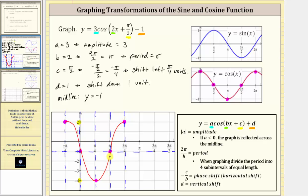Once we have one period of the graph, we can simply copy and paste this graph to the left and right, or just continue the pattern. Moving to the right, we would be at the midline, then down at a minimum, and back to the midline. We can complete more of the graph to the right. Going to the left of where we started, we would be at the midline here. I hope you found this helpful.